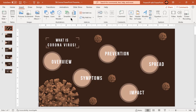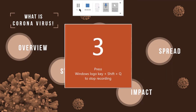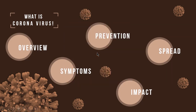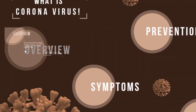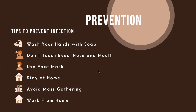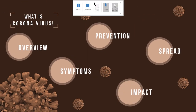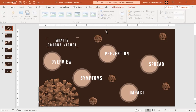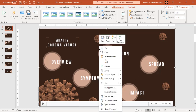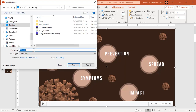Let's go to the Insert tab and choose the Screen Recording option. Set your recording area and then click on Record. Now we can animate all of our presentation, and the same will be recorded as video. Once we stop the recording, this video will be added into our slide. Right-click and choose Save Media As. Give it a file name and click on Save.